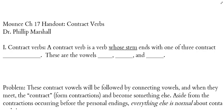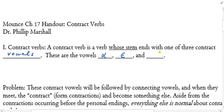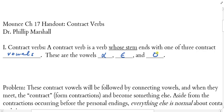A contract verb is a verb whose stem ends with one of three contract vowels. There are three contract vowels that we will be dealing with: alpha, epsilon, and omicron. So these are the contract vowels. Now when I say a verb whose stem ends with one of three contract vowels, I'm not talking about a verb that just ends with one of these.